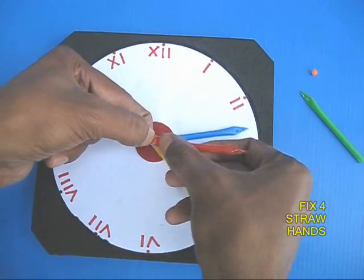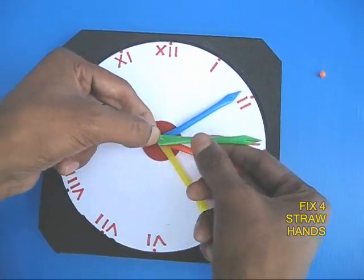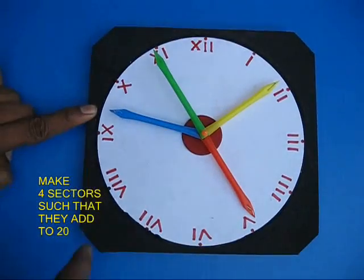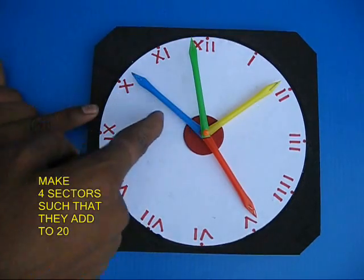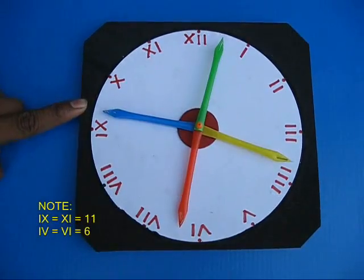The Roman 11 and 9 would be the same. That would be X would stand for 10 and a bar would be 1. Similarly, Roman 4 and 6 would be the same. That there will be 6.